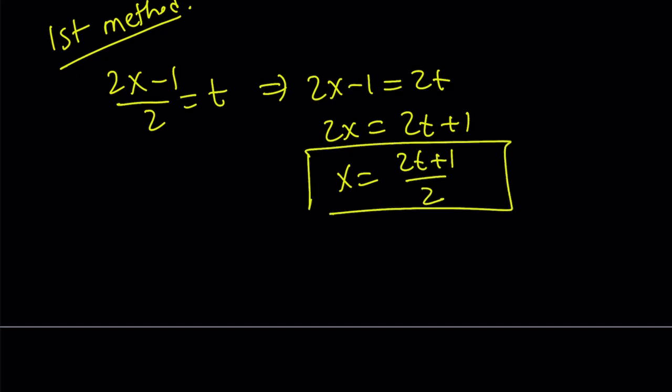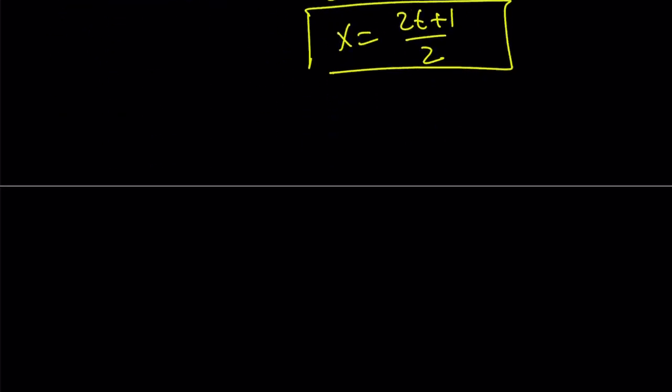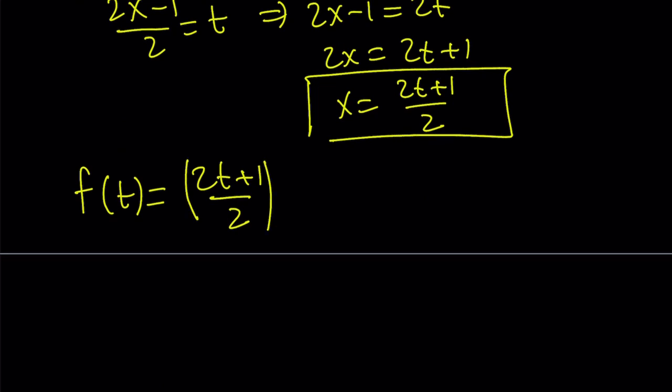So I'm going to go ahead and substitute that on the right hand side as well. And here's what I get: f of t equals 2t plus 1 over 2, which replaces x by the way, and that'll be squared. And from that, I'll just subtract the same thing.